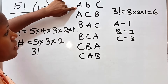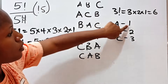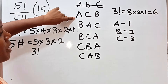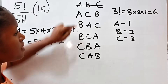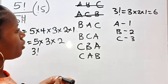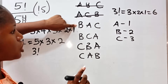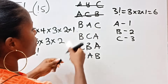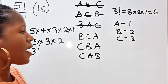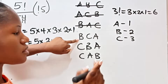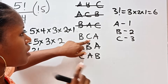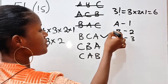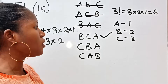What the sub-factorial says is that A must not return to its first position, B must not be in the second position, and C must not be in the third position. Let's check: A is in its first position in the first arrangement, so we cannot take it. In the second arrangement, A is still maintaining its first position, so we cannot take that one either. In the third arrangement, B and A are not maintaining their positions, but C is in the third position, so we cannot take it.